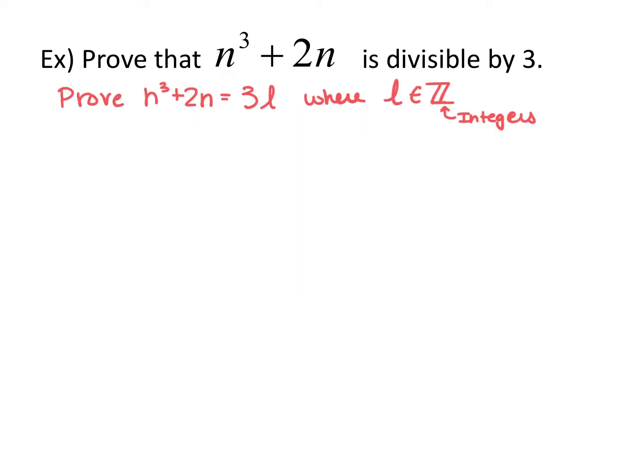For this next proof, it's set up a little differently. Prove that n cubed plus 2n is divisible by 3. Being divisible by 3 is the same as saying you can multiply 3 times some integer and get n cubed plus 2n. So I'll set it up as: prove that n cubed plus 2n equals 3l, where l is some integer in the set of integers. Go ahead and pause the video and use induction to prove this.